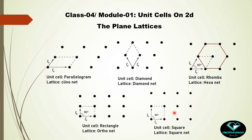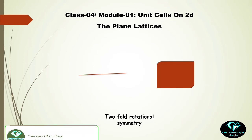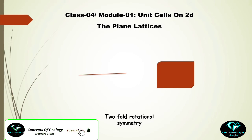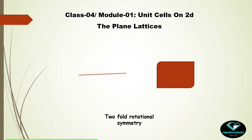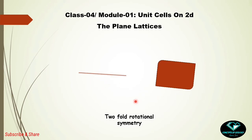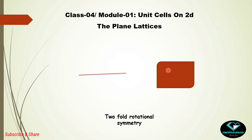We have concluded that only five lattices are possible in two dimensions. Now we will find what symmetries are present in these five arrangements. An object is said to have rotational symmetry when no change can be detected if the object is rotated by a certain degree. For example, if you rotate a line through its midpoint by 180°, you will have no sense that the object has rotated at all — so the midpoint has a two-fold rotational axis.